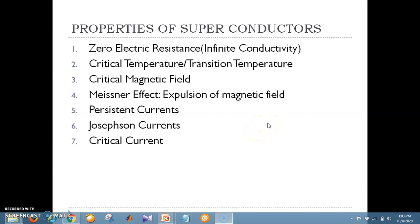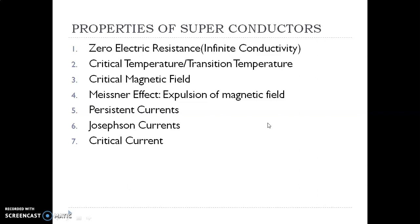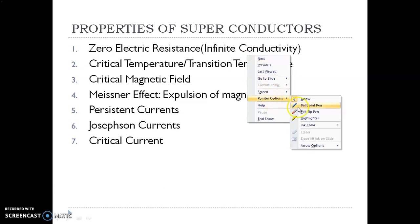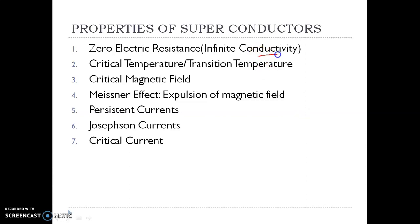Hello all. We were discussing mainly about the properties of superconductors. We have discussed about zero electrical resistance, critical temperature or transition temperature, critical magnetic field, and the Meissner effect — that is, expulsion of magnetic field from a superconductor material. We have also discussed the persistent current, Josephson current, and critical current.